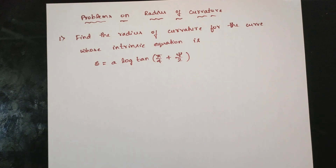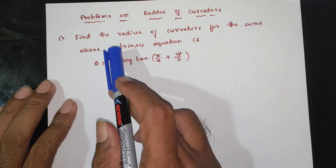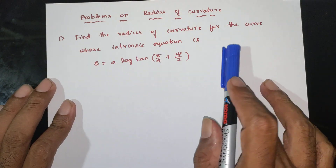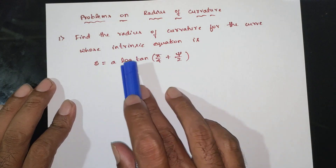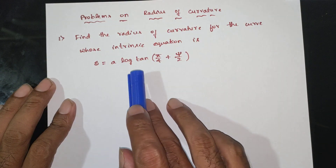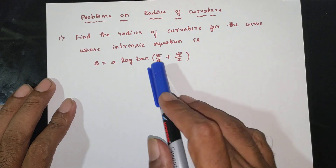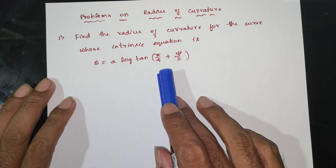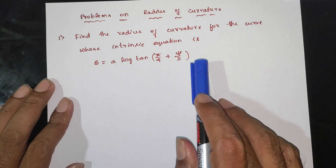If you have problems on the radius of curvature, find the radius of curvature for the curve whose intrinsic equation is s = a·log(tan(π/4 + ψ/2)).